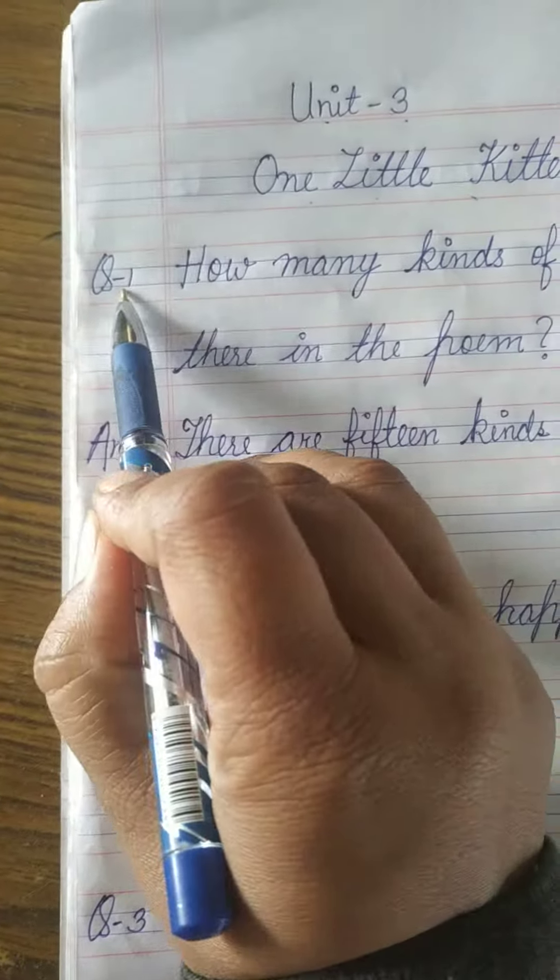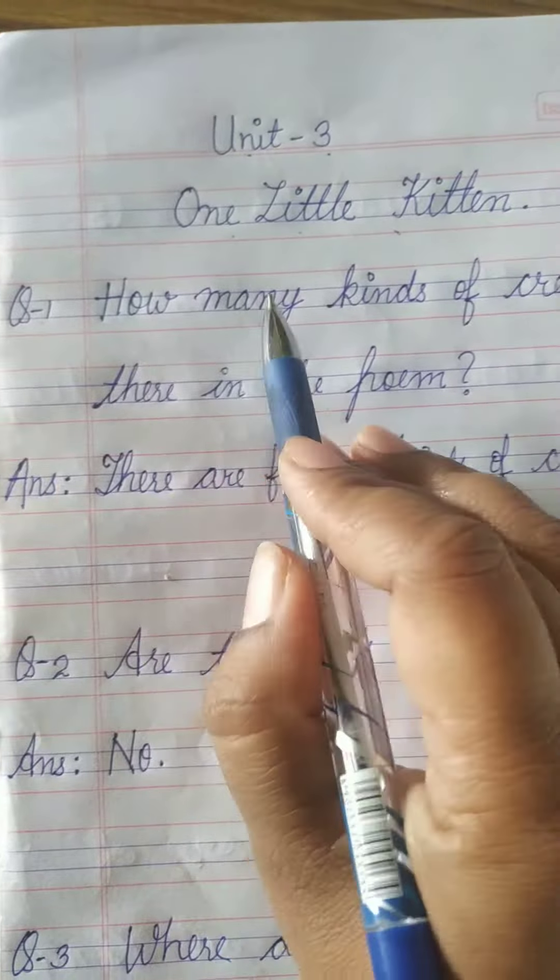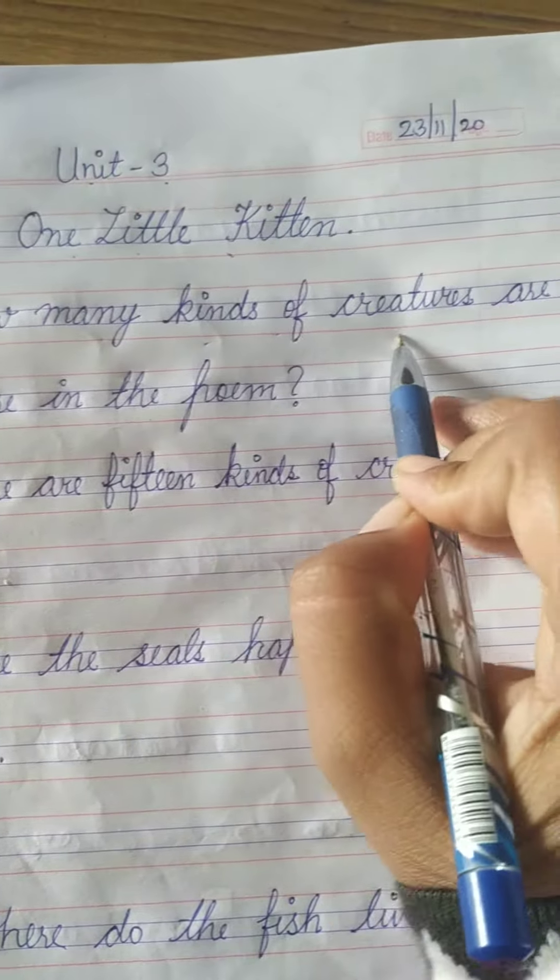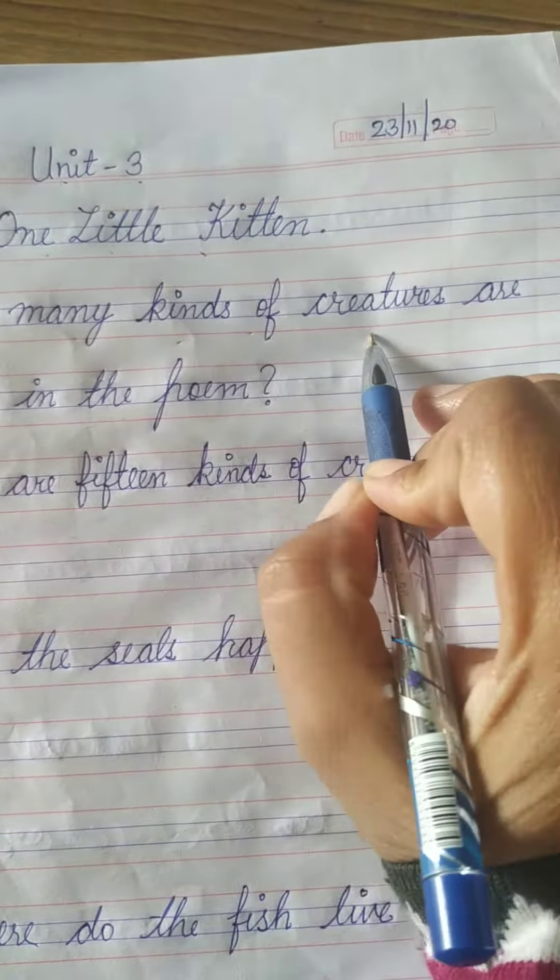Unit three: One Little Kitten. Today we are doing question answers in our notebook. First, we have to write the unit heading 'Three - One Little Kitten,' mention the date, and then begin our questions.